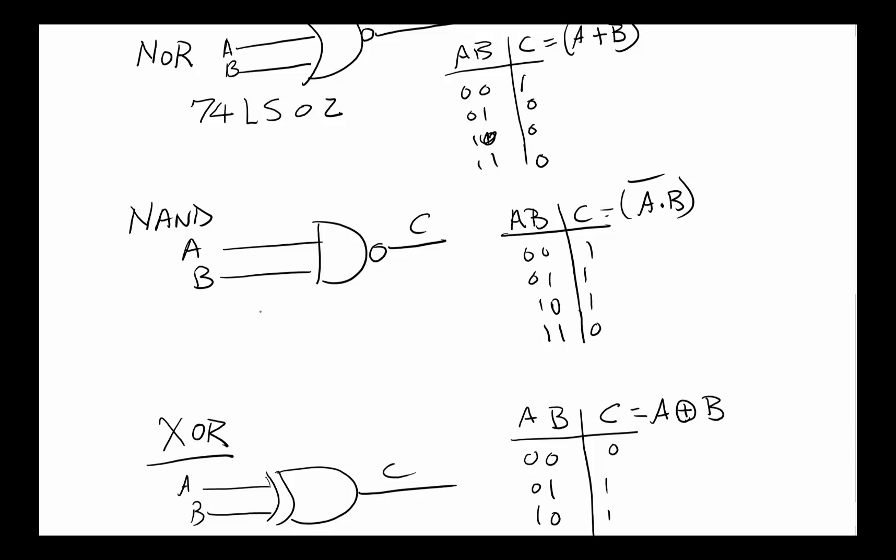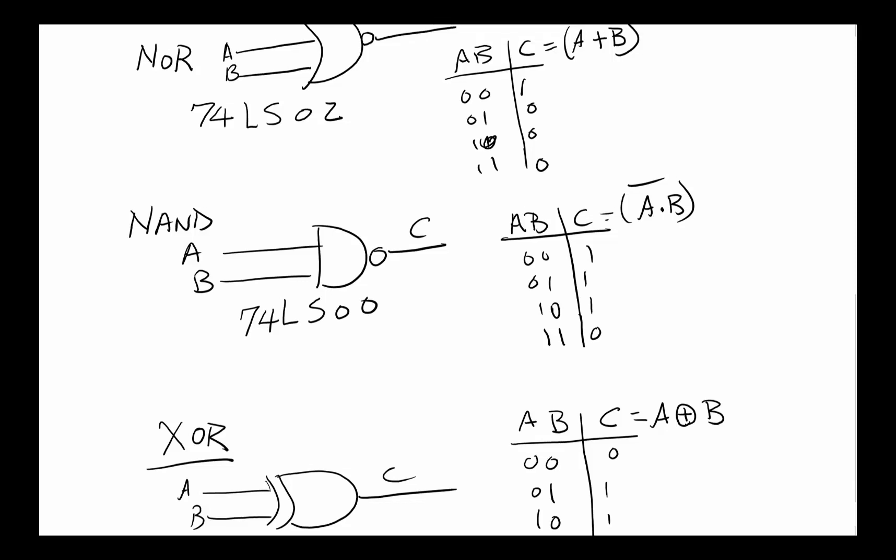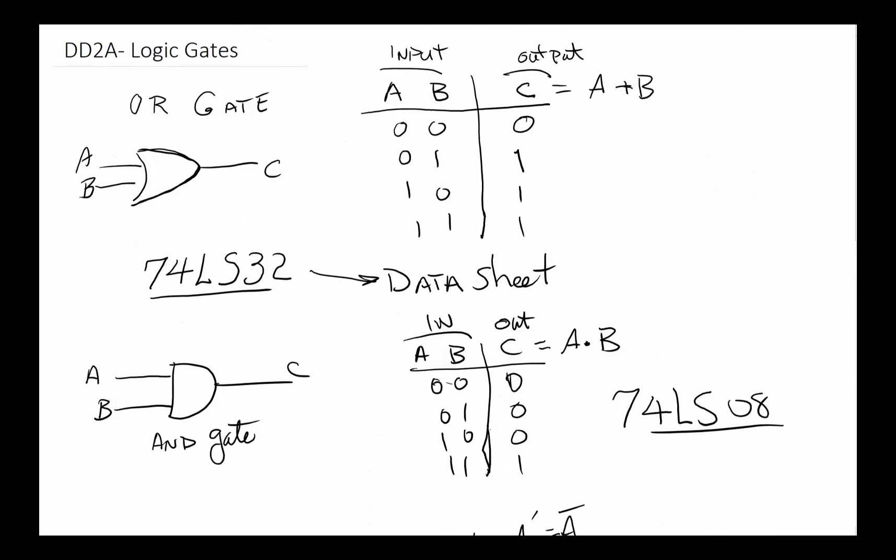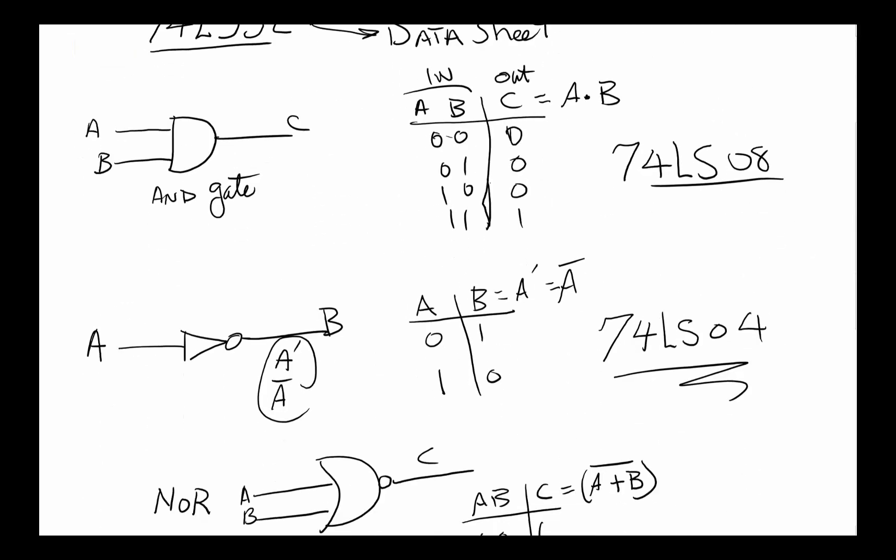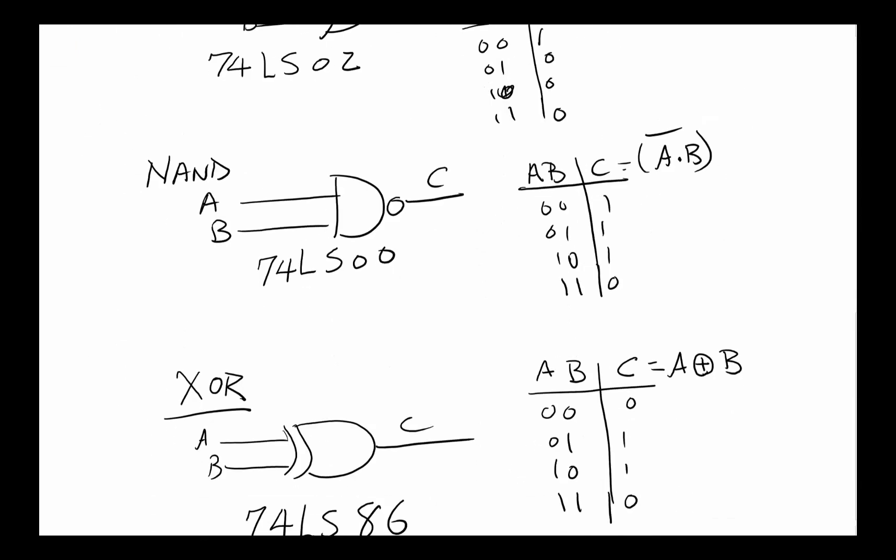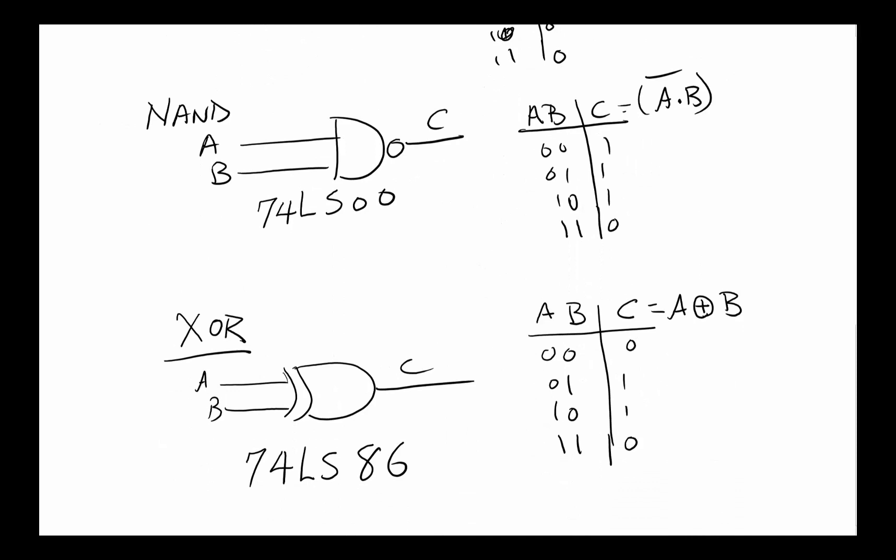Now we got kind of a good listing of the common gates out there. We've got the OR gate, how does it function, the AND gate, NOT gate, NOR, NAND, and exclusive OR. That brings us to the end of discussions around the basic gates.